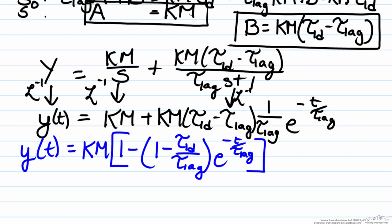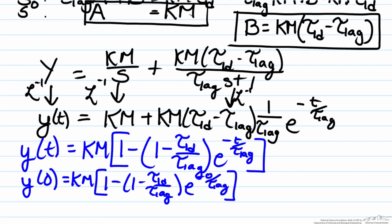In order to analyze this we'll take a look at our initial and final conditions. So y of zero would be km multiplied by one minus one minus tau lead over tau lag multiplied by this exponential. Well the exponential of zero is going to be one, so therefore the inside of the brackets will become one minus one minus one minus minus one becomes a plus tau lead over tau lag. The ones cancel and that shows the fact that our initial value will be km multiplied by the ratio of tau lead over tau lag.